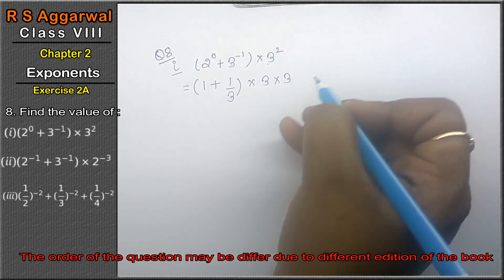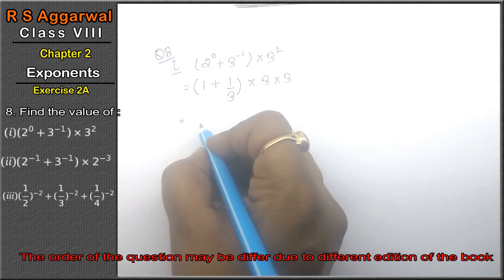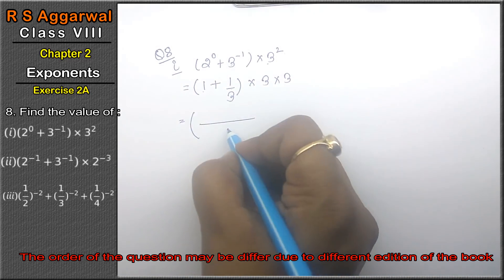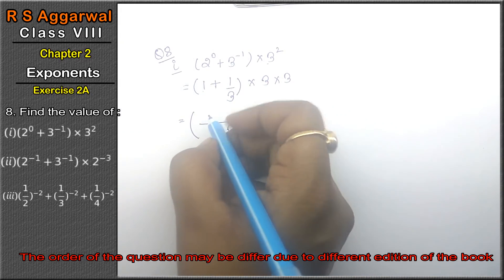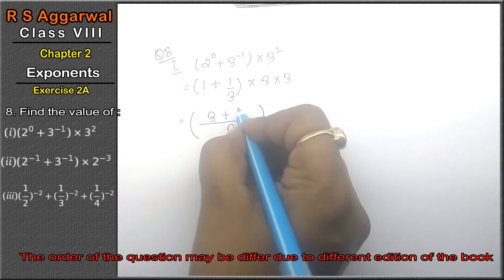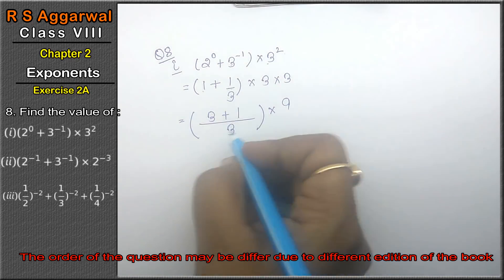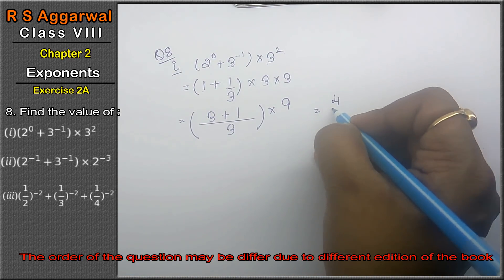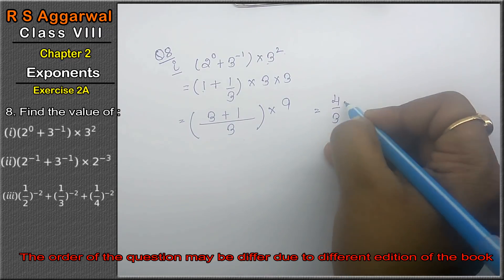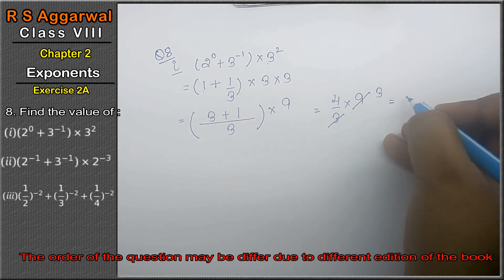Right friends, to ye kiya aya? Pahle isko solve karengei bracket ko. LCM leke solve karengei, plus ka sign hai. To ye kiya aya? 3 plus 1 into 3. 3 squared is 9. To ye kiya aya? 4 upon 3 into 9. That means 12 is the answer.